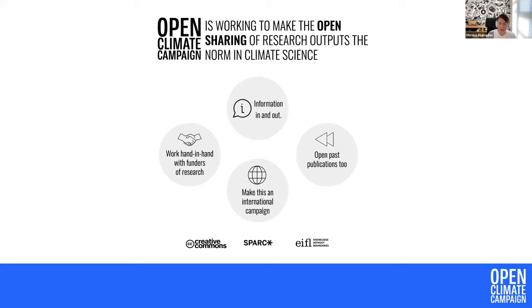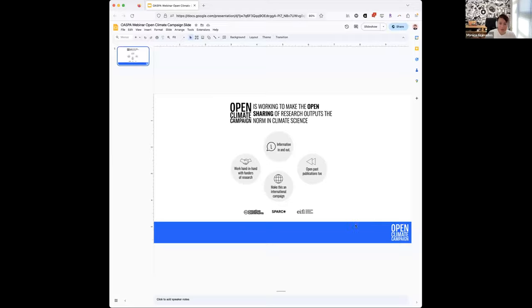We want to do that by working hand-in-hand with funders of research. We want to do advocacy and do these types of webinars where we talk about this message — the important work that you are doing to help address the climate crisis. We want to open past publications and make sure this is an international campaign, not just geolocated to areas where open has been a focus. I'm happy to introduce Dr. Vincent Larivier, a professor of information science at the Université de Montréal, where he holds the UNESCO chair on open science and serves as associate vice president of planning and communications. Vincent is going to tell us about the access and availability of climate change research.